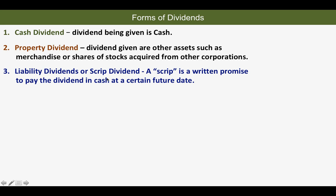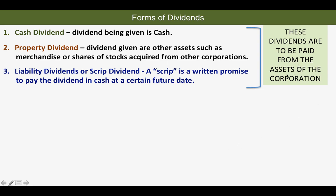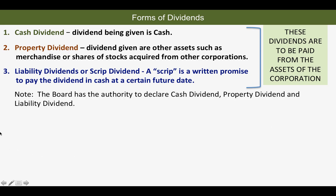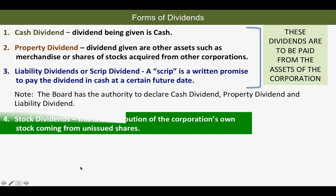A scrip dividend is just delaying the payment of cash dividend. All three of these dividends are to be paid from the assets of the corporation, and the board has the authority to declare these types of dividends.